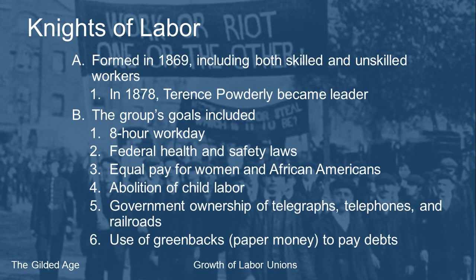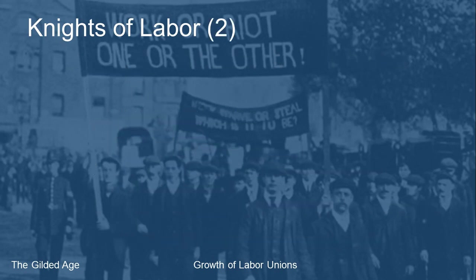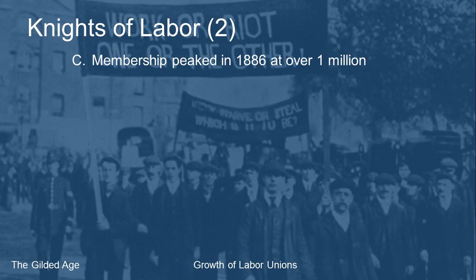The Knights also wanted the government to allow people to use greenbacks — a form of paper money used during the Civil War. The government was trying to get rid of greenbacks because they were causing inflation, but workers wanted them to continue to be printed so they could help pay off debts. Membership in the Knights of Labor peaked in early 1886 at over one million members nationwide — a huge union.